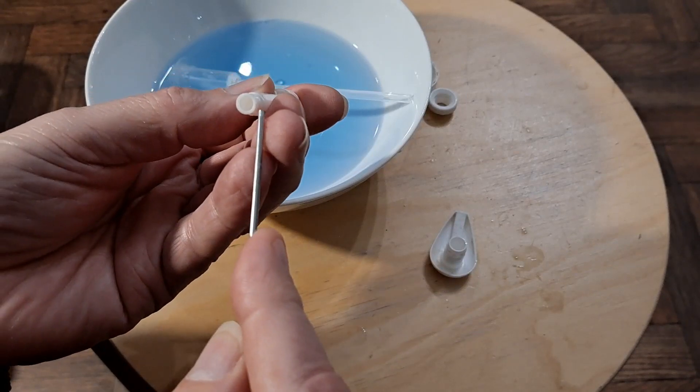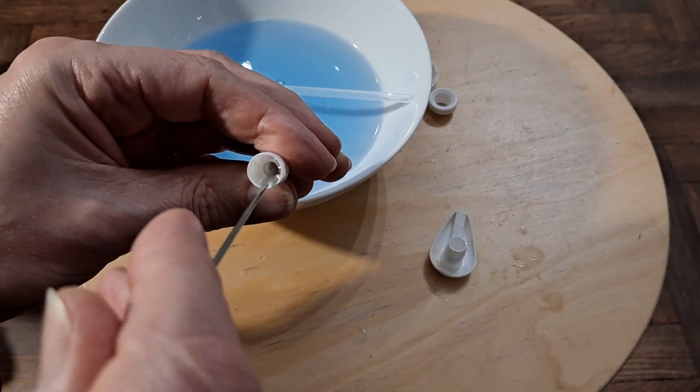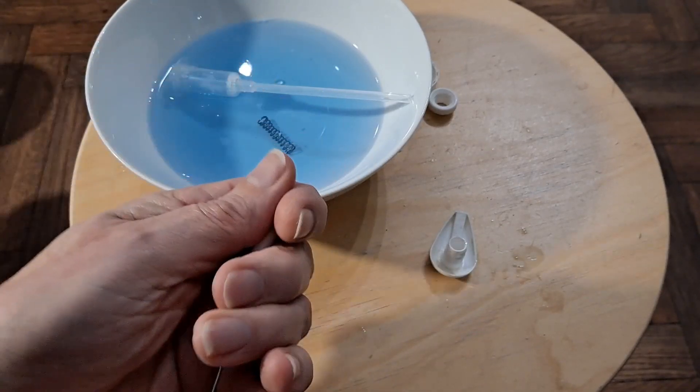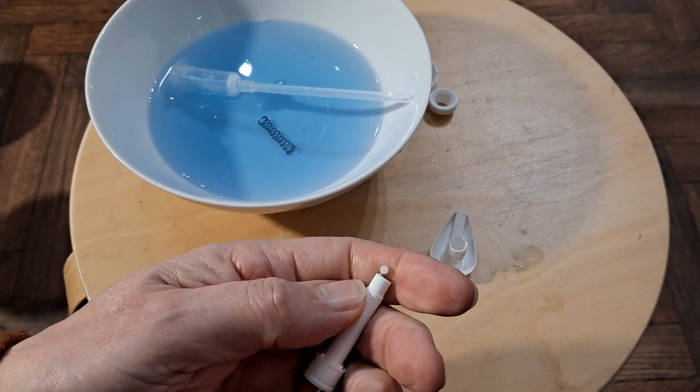I think the bicycle spoke will be too big. But we'll try. Oh, it did come out as easy as that. There we go. Tiny little ball.